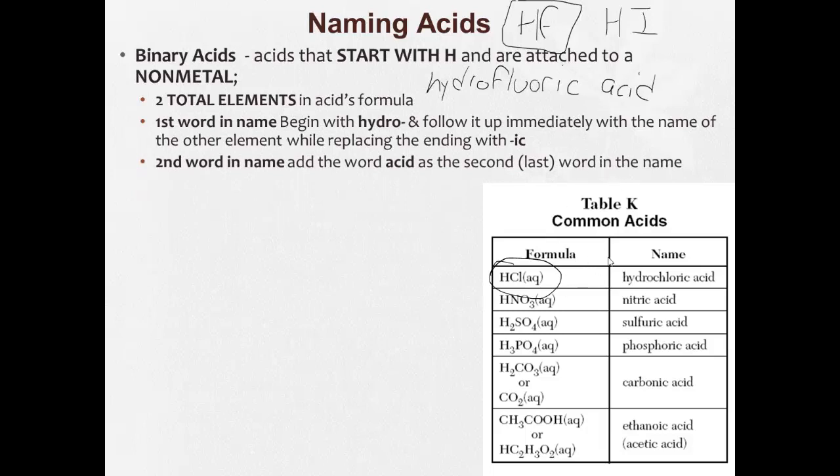So just like here, HCl, hydrochloric acid. Hydrochloric acid. HI would be hydroiotic acid.